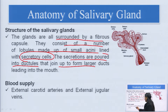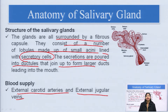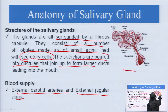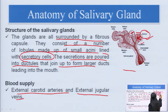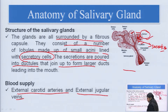For blood supply, the external carotid arteries and external jugular veins supply the salivary glands. Looking at the structure, we can see the lobules. Each lobule is made up of small acini lined with secretory cells that form the secretions, which are then poured into the duct.